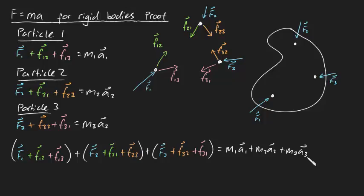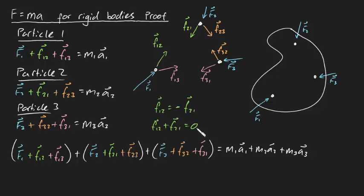And this is where the magic starts to happen. Newton's Third Law says that if we have one force acting on another particle, there's an equal and opposite force acting on the original particle. So F12 must be equal to negative F21 — in other words, F12 plus F21 equals zero. That's really beautiful, because it means the internal force pairs cancel each other out. When you sum all forces together, the internal forces eat each other up and they turn to zero.